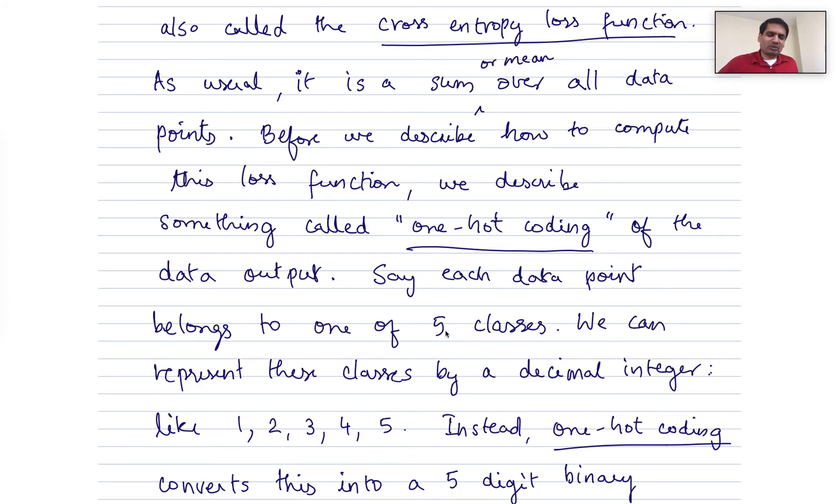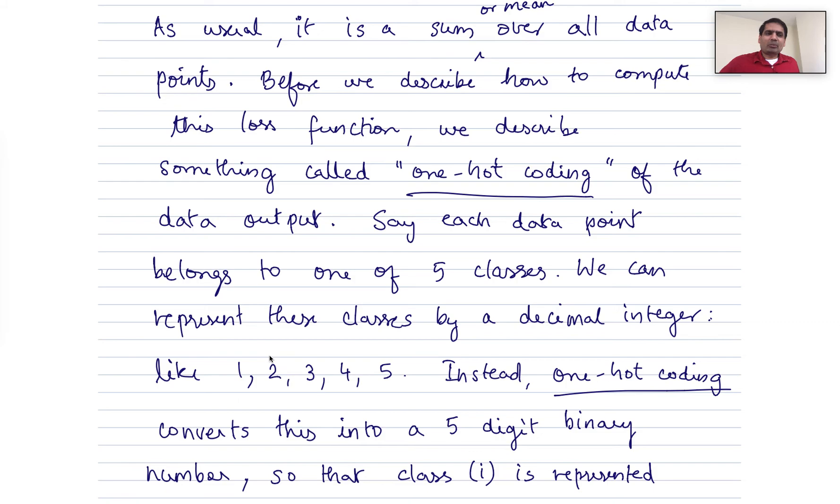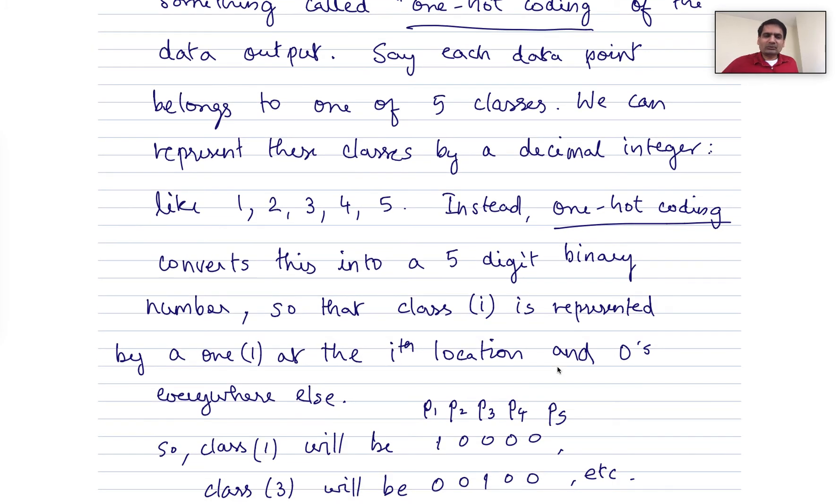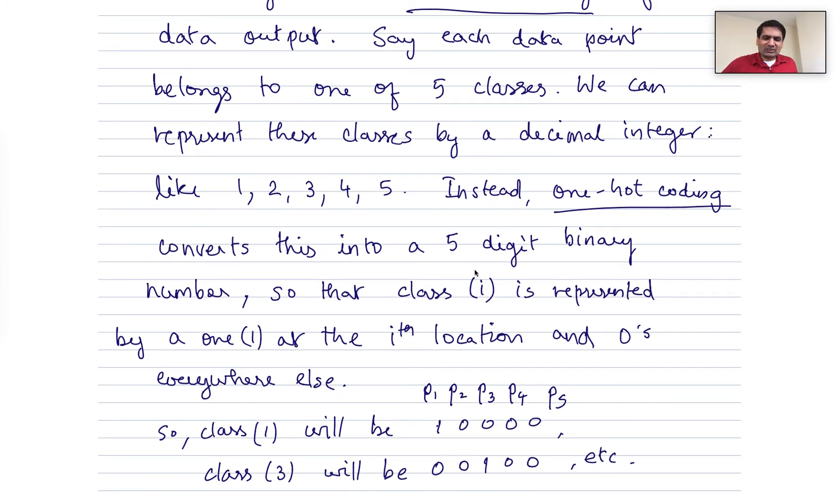Say each data point belongs to one of five different classes. We can represent these classes by a decimal integer, like we've always done. So we can say it's one, or two, or three, or four, or five, like for the MNIST database, it was zero to nine. So instead of describing the actual class using this integer, we use what's called one-hot coding, or dummy coding, which converts an integer into basically a five-digit binary number. So that the i-th binary number is actually one, if it belongs to class i.